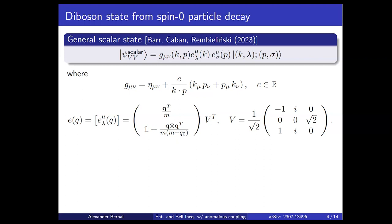Now let us introduce the states we will work with throughout this presentation: the general scalar state of a pair of vector bosons. These states were first presented by Alan, Pavel, and Jacob in 2022 and published in 2023. They are represented in a form where a metric is contracted with corresponding amplitudes. The metric is the standard Minkowski metric in the mostly-negative signature, plus a new term depending on the momenta k and p of the two vector bosons and a real parameter c.